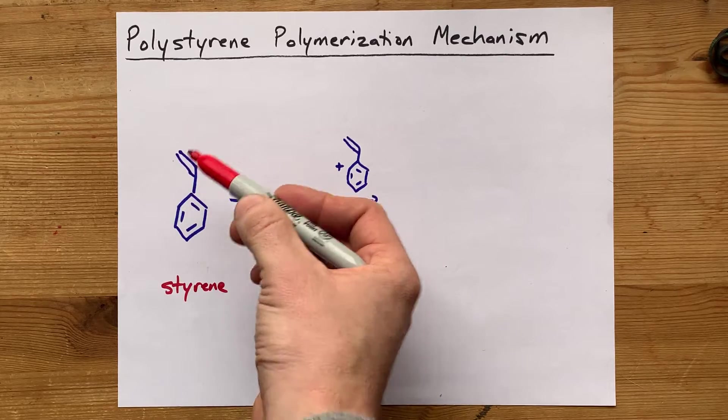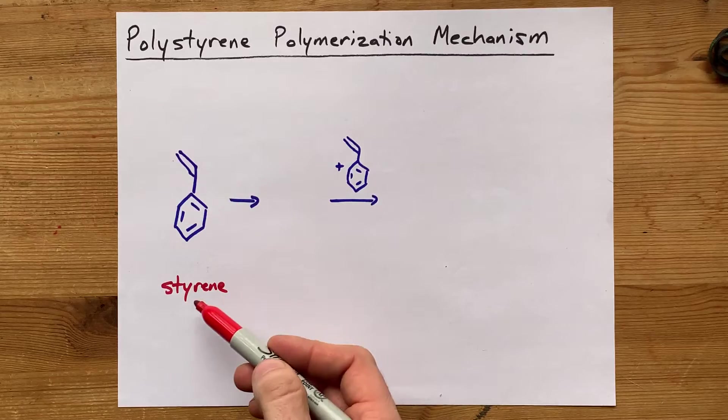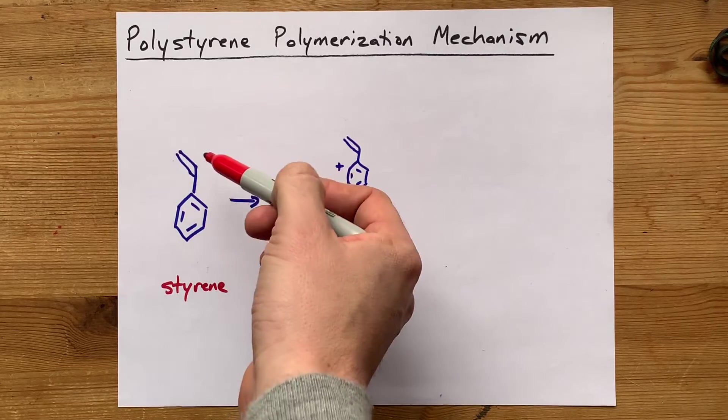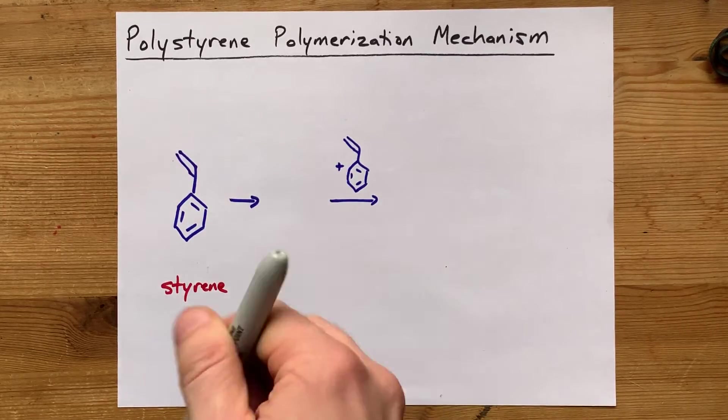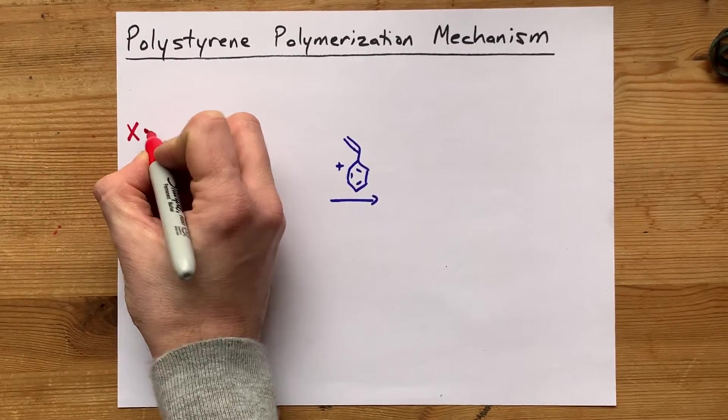This is the one that's going to get attacked by our free radical. A double bonded monomer, or a monomer with double bonds in it, is probably going to undergo addition polymerization. And for that, you're going to need some kind of free radical.